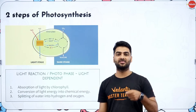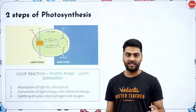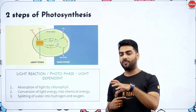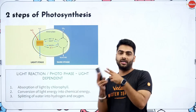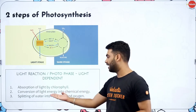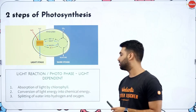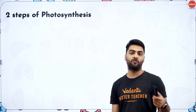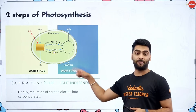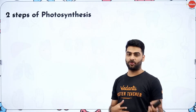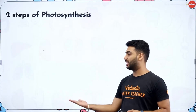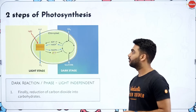Photosynthesis is the process by which green plants, certain bacteria, and algae trap sunlight, take carbon dioxide from the air, and water from the roots. Carbon dioxide is reduced to carbohydrates, water is split into hydrogen and oxygen, and light energy is converted to chemical energy — oxygen and water vapor are byproducts. Photosynthesis is a two-step process: first, splitting of water and light-to-chemical energy conversion; then carbon dioxide is reduced to carbohydrates in the dark.